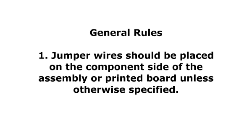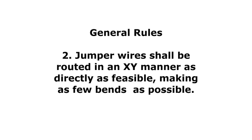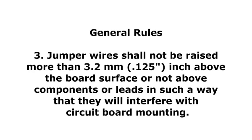General Rules: 1. Jumper wires should be placed on the component side of the assembly or printed board unless otherwise specified. 2. Jumper wires shall be routed in an XY manner as directly as feasible, making as few bends as possible. 3. Jumper wires shall not be raised more than 3.2 mm above the board surface or not above components or leads in such a way that they will interfere with circuit board mounting.